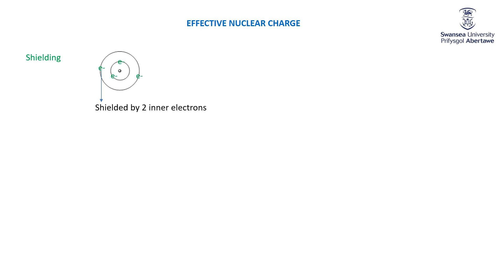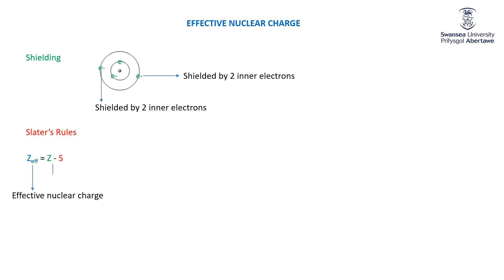We need to take all that into account, as put together by Slater. Z is the atomic number, and S is the so-called shielding constant. When you take the actual nuclear charge and subtract the shielding constant — which represents the amount that a particular electron is shielded by all the other electrons in the atom — you get the effective nuclear charge: the positive charge actually felt by that particular electron.